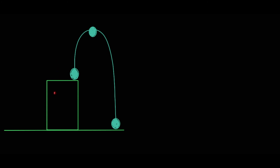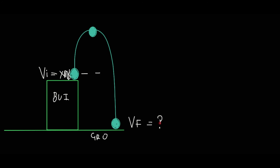A third scenario: a person throws a tennis ball from above the ground — let's say from a building — and the ball is caught at the same height. Because the ball is caught at the same height, the initial velocity equals the final velocity in magnitude. So if the initial velocity is five meters per second, the final velocity also equals five meters per second.